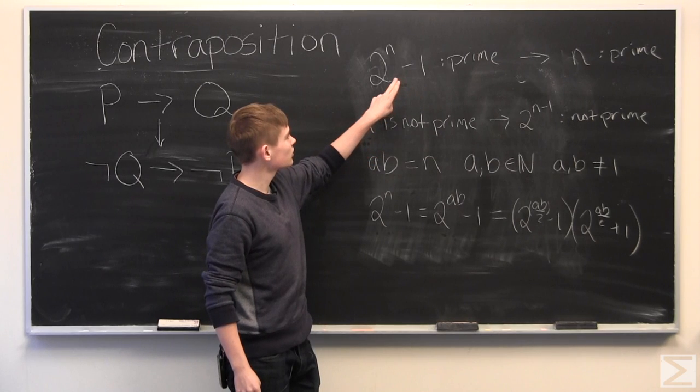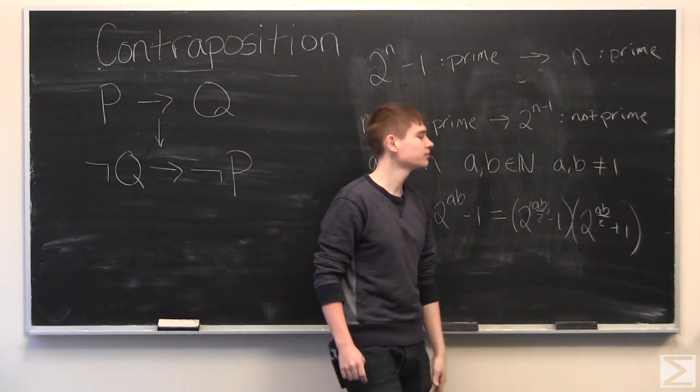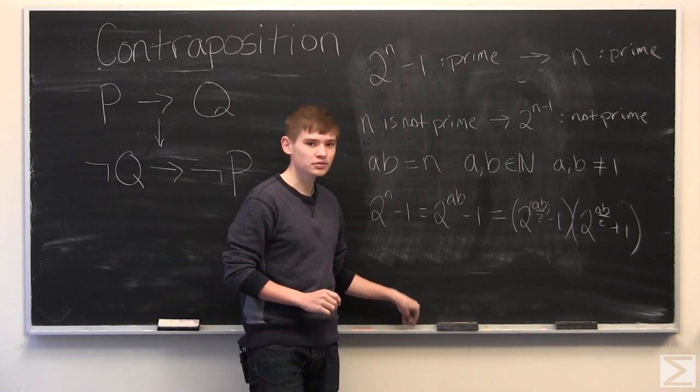And by contraposition, we've shown that if 2 to the n minus 1 is prime, then n is prime. And that is that for contraposition.